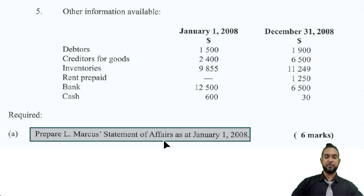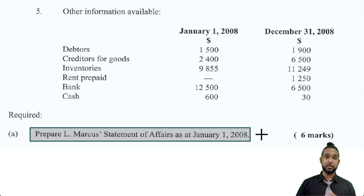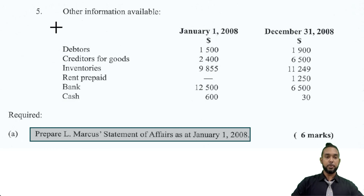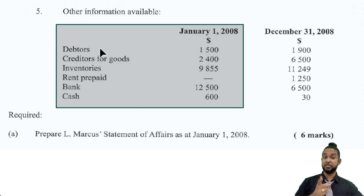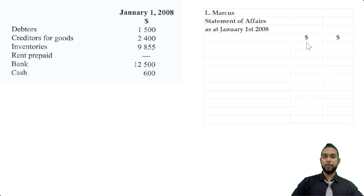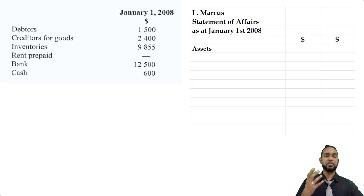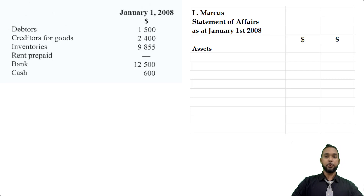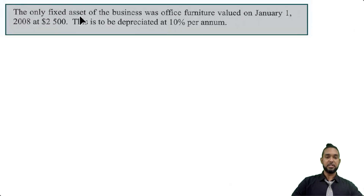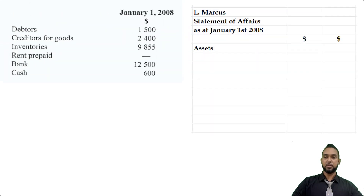In Part A, they're asking us to prepare L. Marcus's statement of affairs as at January 1st, 2008. A statement of affairs is essentially a capital calculation — like a scaled-down balance sheet — where capital equals assets minus liabilities. We'll head up the statement with the entity name L. Marcus, the statement name, and the date January 1st 2008. Going in order of permanence, the only non-current asset was the office furniture valued at $2,500, so we put that first.